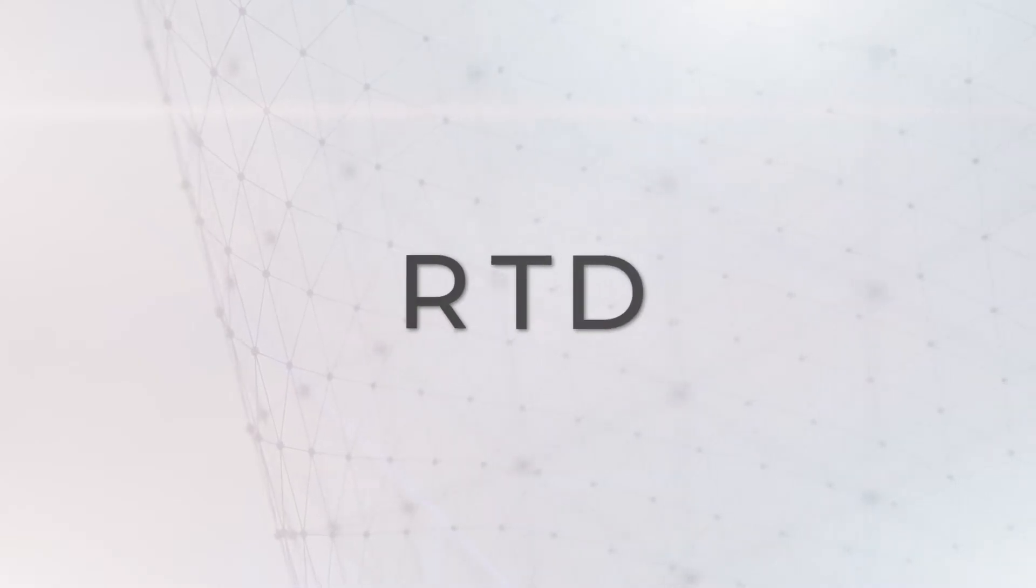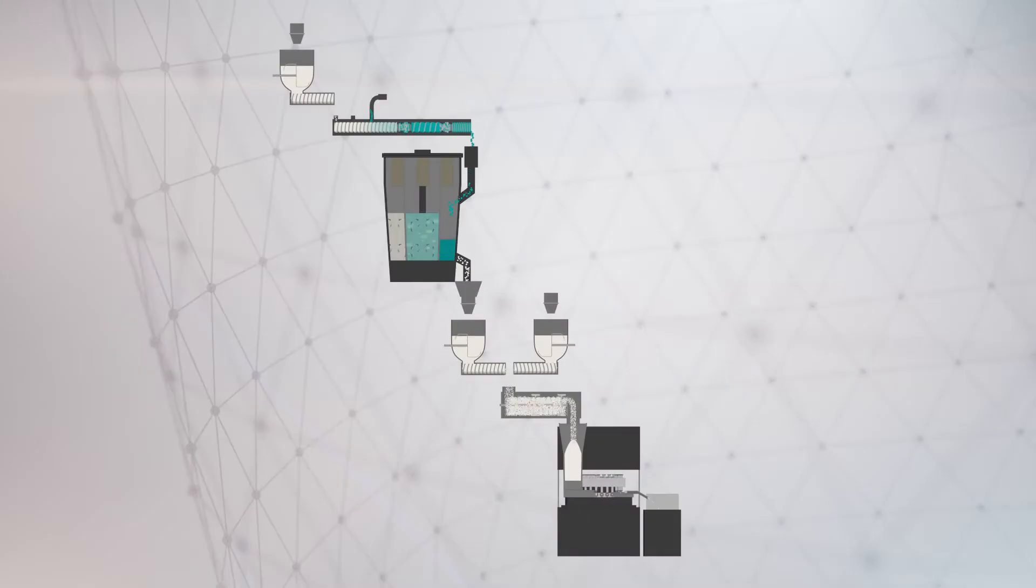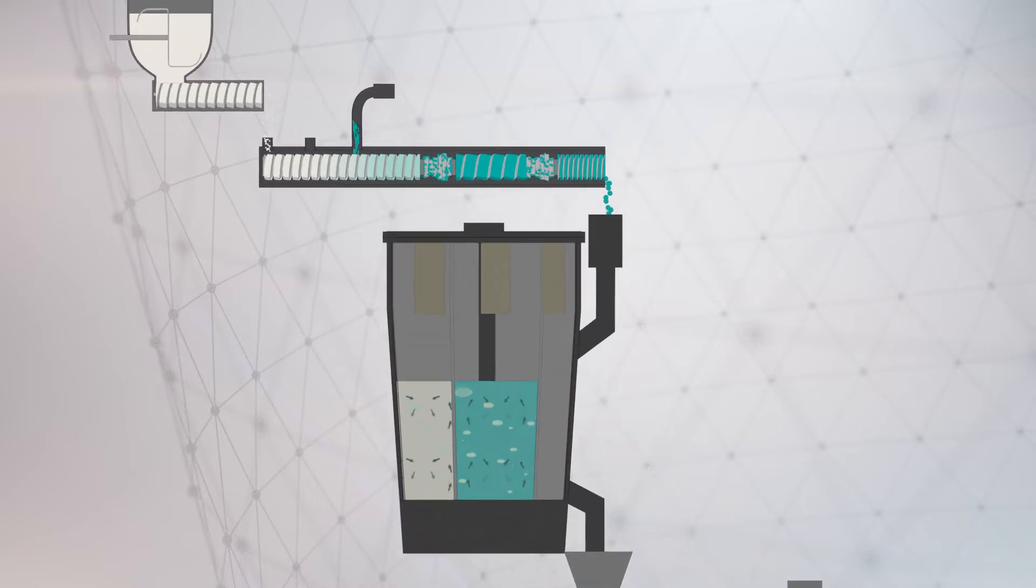Hello and welcome to Continuous Manufacturing Basics. In this video we want to show you how to conduct a residence time distribution test using a color tracer. The unit operation that we use to show this test setup is a twin screw extruder for wet granulation.